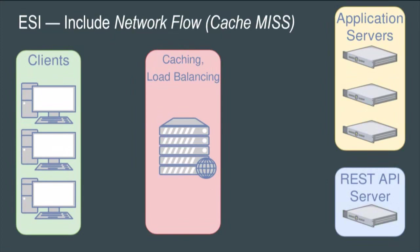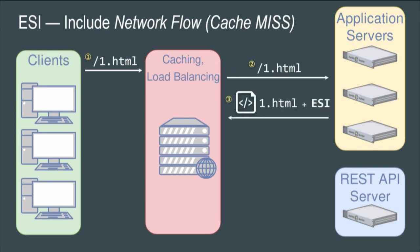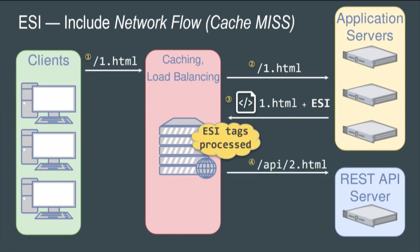To illustrate a cache miss: your client requests 1.html, the caching server has a cache miss, so it goes to the upstream application server. The response comes back with an ESI tag saying 'please fill in the blanks with 2.html.' This tag is parsed on the caching server, and a side request is sent to the API server. The API server responds with the contents of page2, and the ESI engine fills in the blanks.